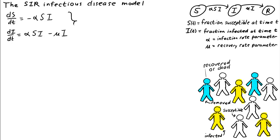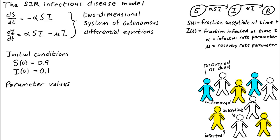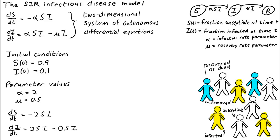Since the SIR model has two state variables, s and i, it is a two-dimensional system of autonomous differential equations. Let's set initial conditions. Since we have two variables, we need two initial conditions. We start with 90% susceptible and 10% infected, meaning no one is in the removed class. Setting alpha to 2 and mu to one-half, we rewrite our system with these numerical values. To analyze the behavior, for a single differential equation we used a phase line to determine where the state variable increases and decreases, and used this to sketch solutions.